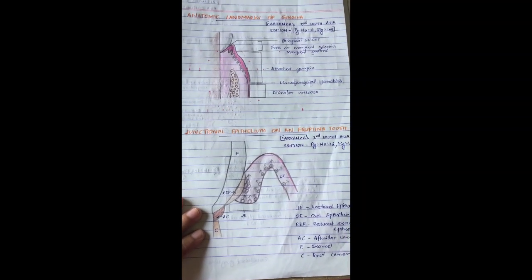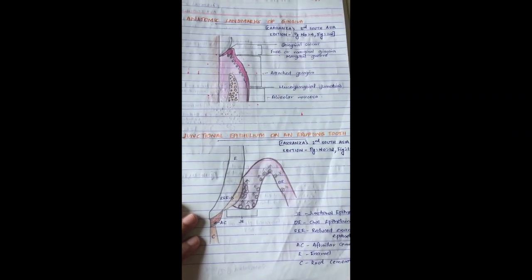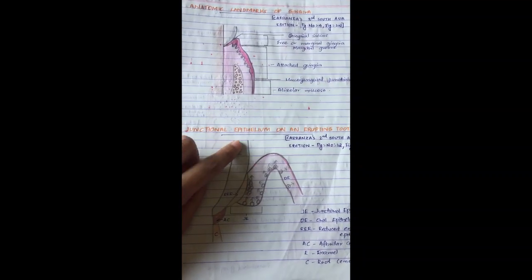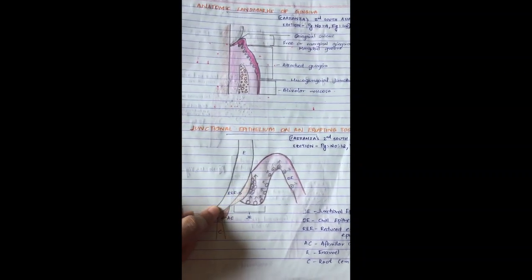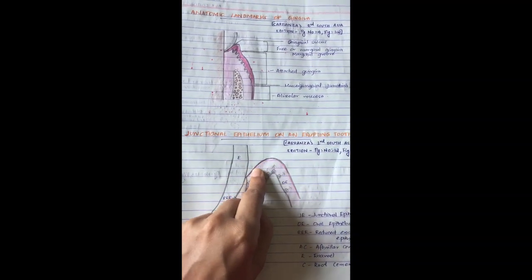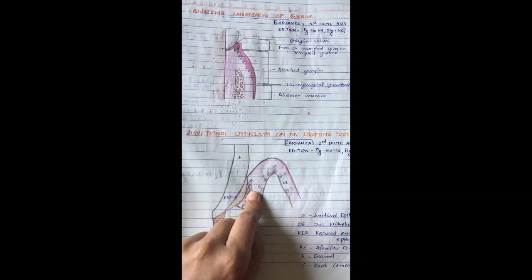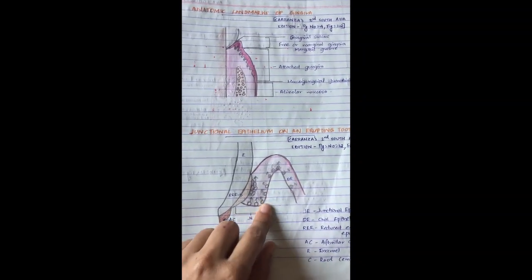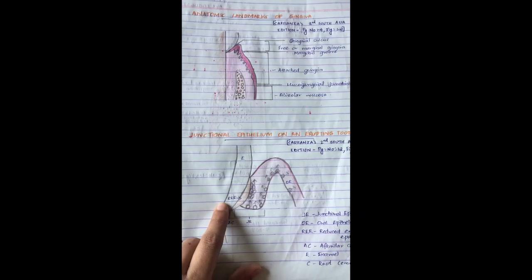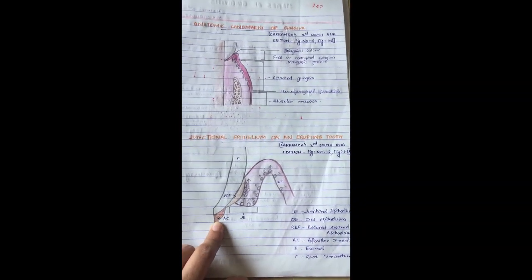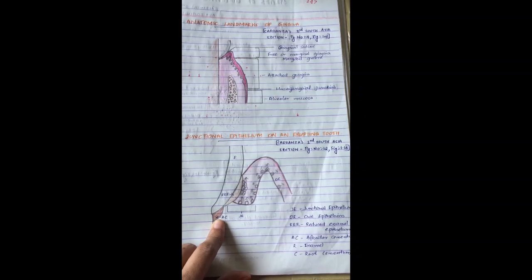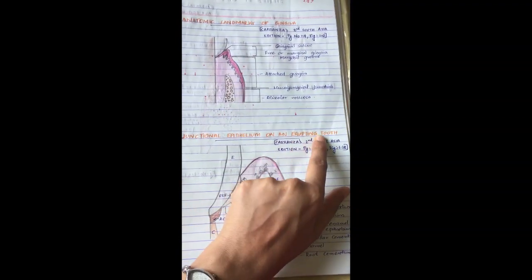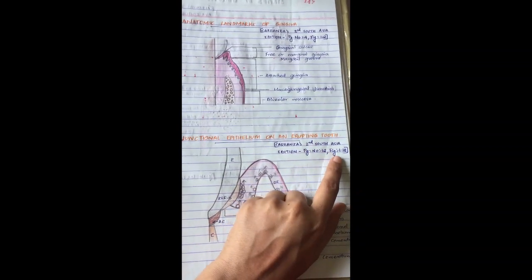Next is junctional epithelium on an erupting tooth, on page number 12. This is the enamel portion, and this is the sulcular epithelium. Beyond the sulcular epithelium, down here is where the formation of junctional epithelium takes place. This is your reduced enamel epithelium, and this is the afibrillar acellular cementum present here.